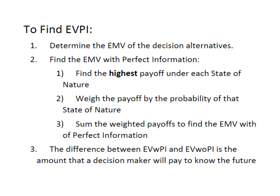The next thing we're going to have to do is find the expected monetary value if we have perfect information. If I knew which state of nature was going to occur, I would simply select the highest payoff under each state of nature. We're going to find those highest payoffs under each state of nature and then weigh them by the probability of that state of nature occurring. We're going to sum those weighted payoffs, and that gives us the expected monetary value with perfect information.